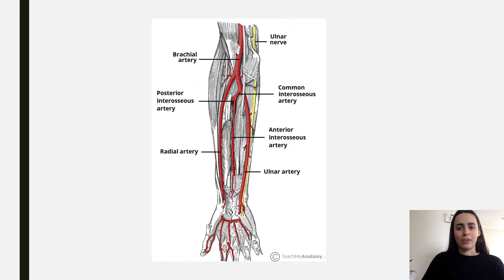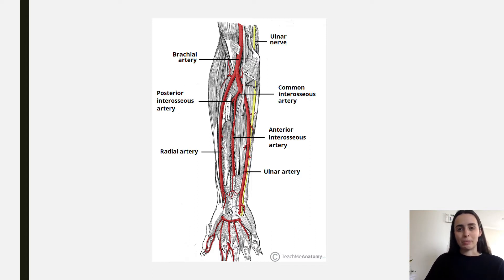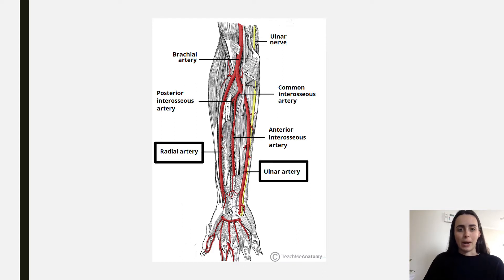If you think about it, you've got the brachial artery which divides into the radial artery and then the ulnar artery. These will be our main blood supplies to the hand, which we'll go into more detail about.